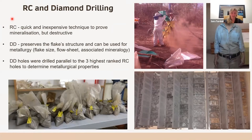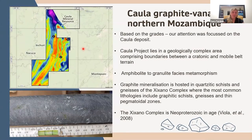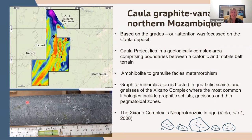We followed this up with diamond drilling. The difference between diamond and RC drilling is that RC drilling is quick but inexpensive — we used it to prove concept of mineralization. The problem is it's quite destructive, and with graphite you're looking for larger flake size, so the destructive method skews results. We drilled the three highest-ranking TGC average RC boreholes with diamond holes to test the metallurgical properties.